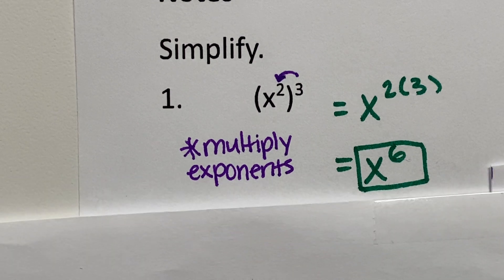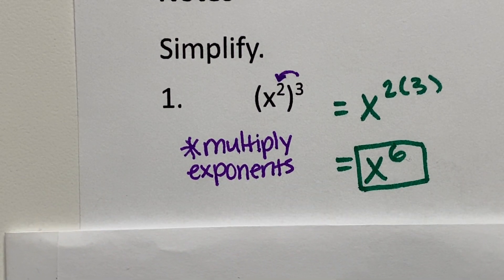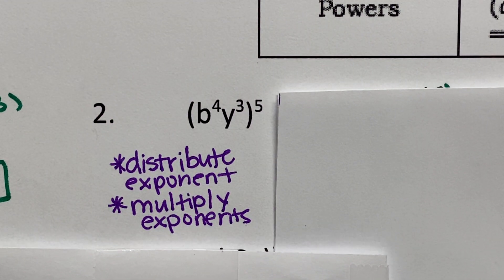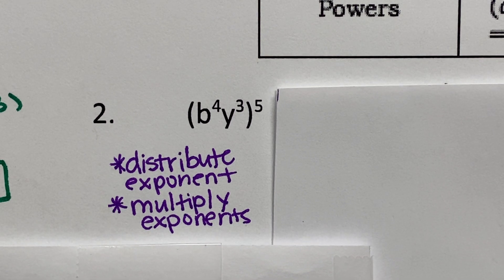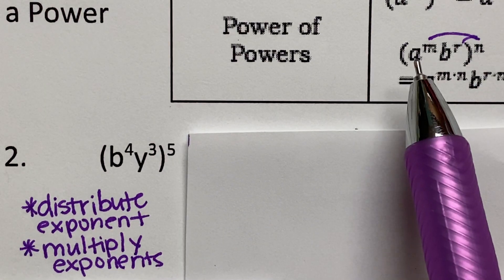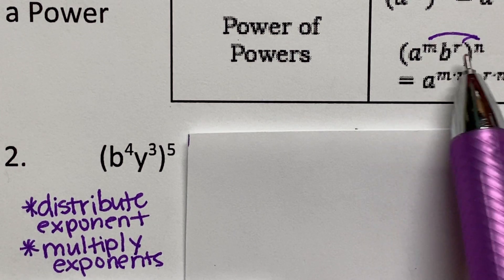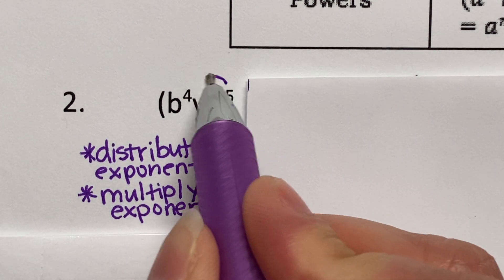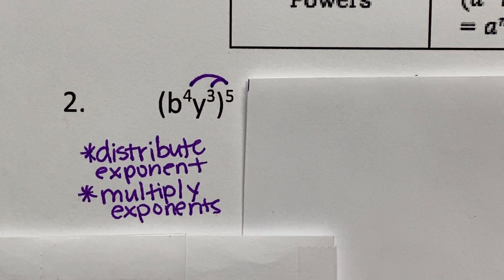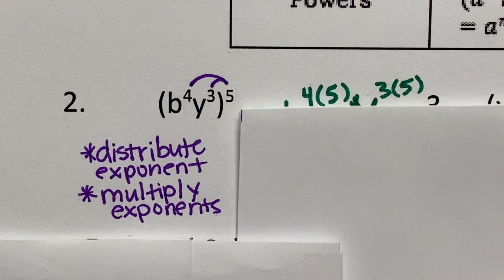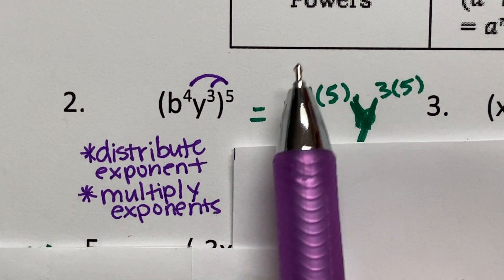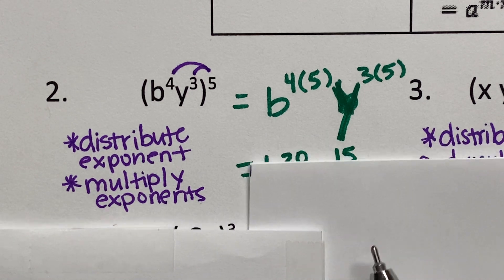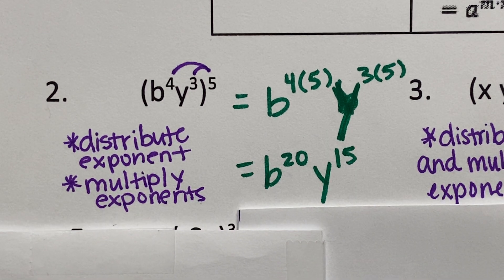In the next example, we're going to look at more than one term inside the parentheses. In example number two, you have b to the fourth power times y to the third, and all of this is raised to the fifth power. You need to distribute that exponent to each term. Take the exponent of five and multiply it with four, then multiply it with three. You only multiply exponents. So you get b to the twentieth power times y to the fifteenth power.